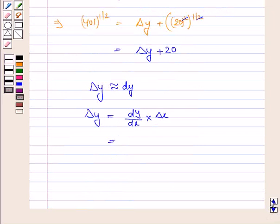Now y is x to the power 1 by 2. So dy by dx is equal to 1 by 2 into x to the power minus 1 by 2 into delta x which is 1. So this is equal to 1 by 2 into x to the power 1 by 2.